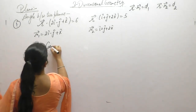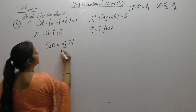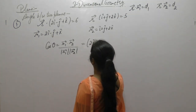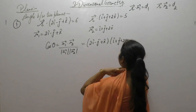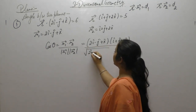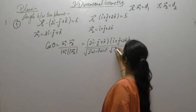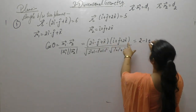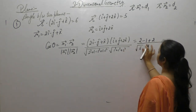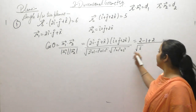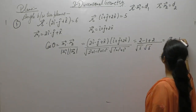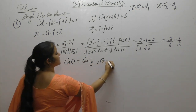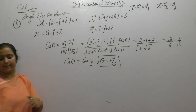Now we want to find the angle between them. Cos theta equals N1 dot N2 upon magnitude of N1 times magnitude of N2. Taking the dot product: (2i minus j plus k) dot (i plus j plus 2k) gives 2 into 1 minus 1 into 1 plus 1 into 2 equals 3. The magnitudes are root 6 and root 6. So cos theta equals 3 by 6 equals 1 by 2, which is cos(pi/3), so theta equals pi by 3.